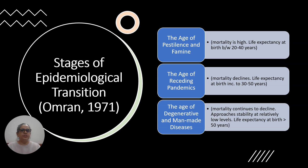Omran in 1971 gave three stages of epidemiological transition. First, the age of pestilence and famine, where mortality was high and life expectancy was very low, between 20 to 40 years. This was followed by the age of receding pandemics, when pandemics started receding, mortality declined, and life expectancy improved to 30 to 50 years. Then the age of degenerative and man-made diseases, where mortality continued to decline and stabilized at relatively low levels, and life expectancy improved to more than 50 years.